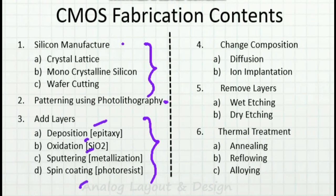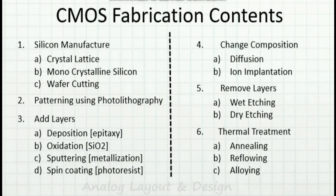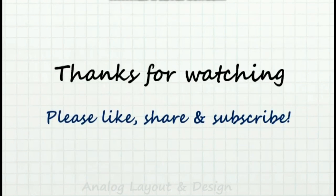Today we discussed silicon manufacturing, photolithography and patterning, and addition of layers using deposition, oxidation, sputtering, and spin coating. The remaining contents — how we change the composition, how we remove layers, and thermal treatment — will be covered in the following video. Thanks for watching. Please hit the like button if you liked the video and don't forget to share and subscribe.